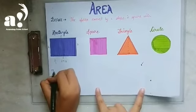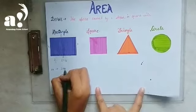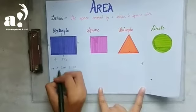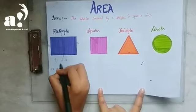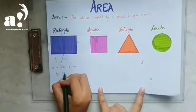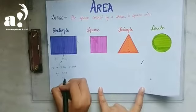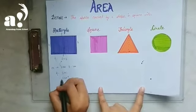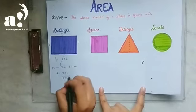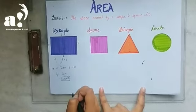For example, a rectangle has length 2 cm and breadth 1 cm. When we put these values into our formula, the area is 2 multiplied by 1, which equals 2 cm². It is very important to write the square units when calculating area.